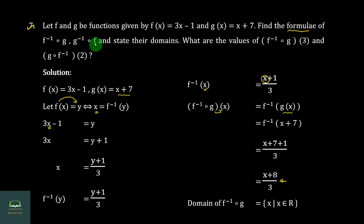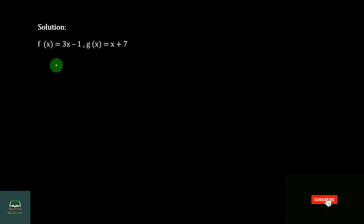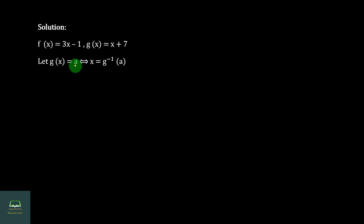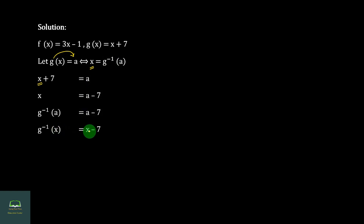Now for G⁻¹∘F: the formula of G inverse will be added to the composition. G inverse formula: if G(s) = s plus 7, then s equals x minus 7, so the G inverse formula gives s equal to x minus 7.